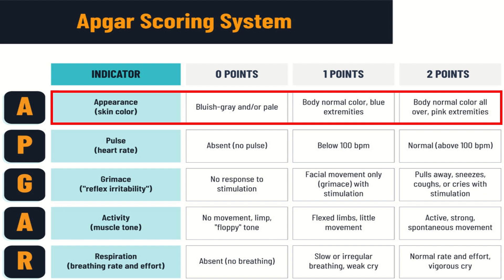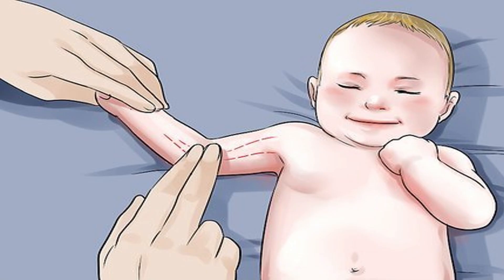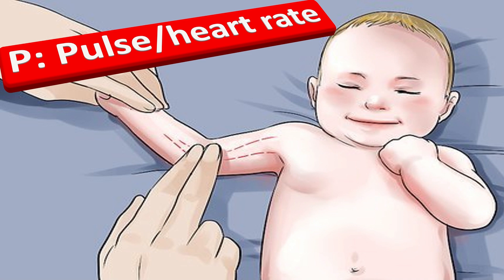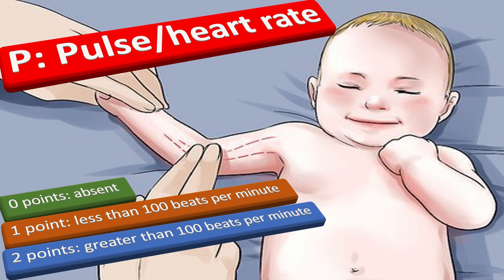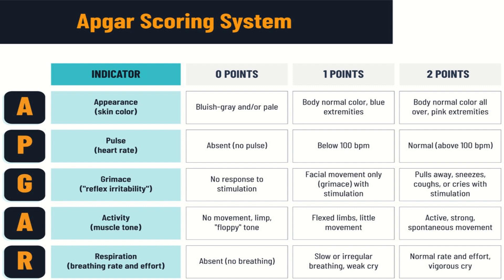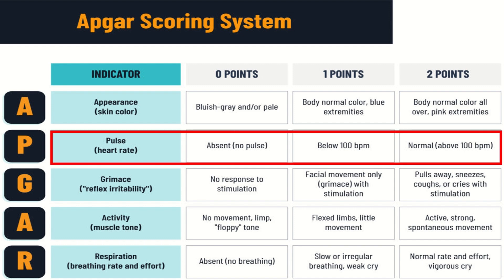The next letter in APGAR score is P, which indicates the pulse or heart rate of the baby. 0 points means the pulse is absent. 1 point means the pulse is less than 100 beats per minute. 2 points means the pulse is greater than 100 beats per minute. In the APGAR scoring system chart, the letter P indicates the pulse or heart rate, and different points are given depending on how the pulse is.